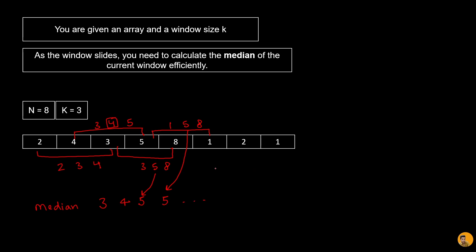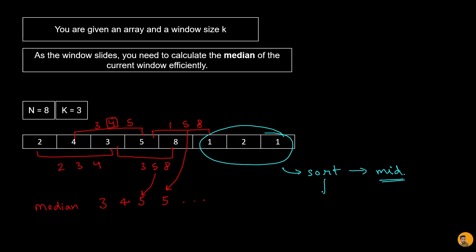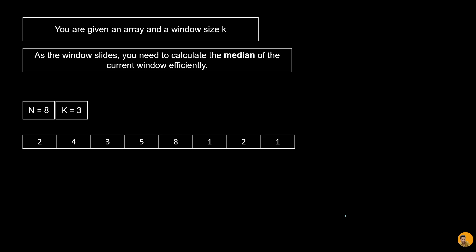One basic solution would be to take each window portion, sort it, and return the mid value. The sorting cost is O(k log k) and we perform this for n values, so the overall time complexity is O(nk log k), which is not quite good. So let's look at a better approach.